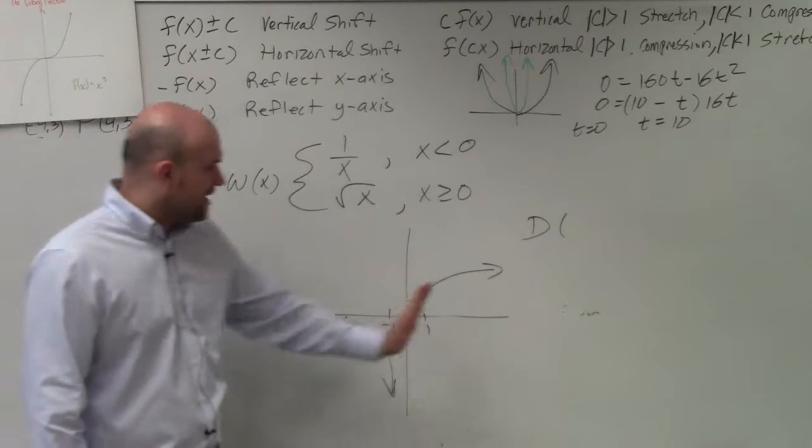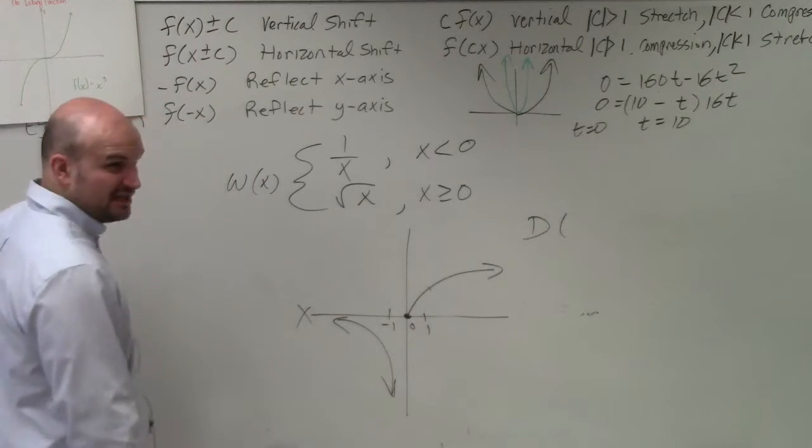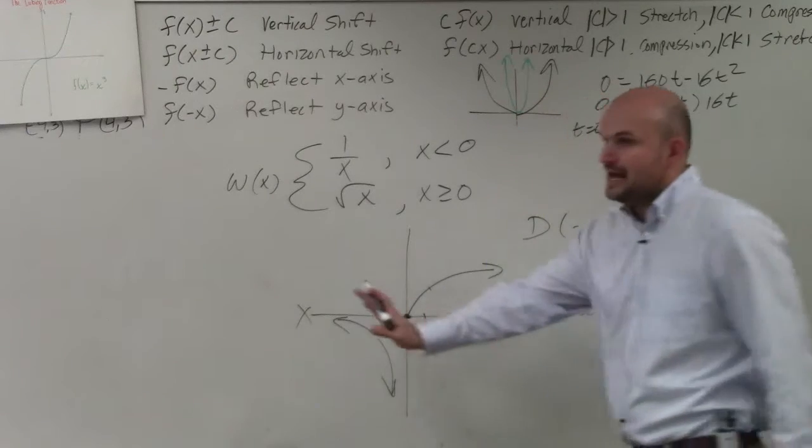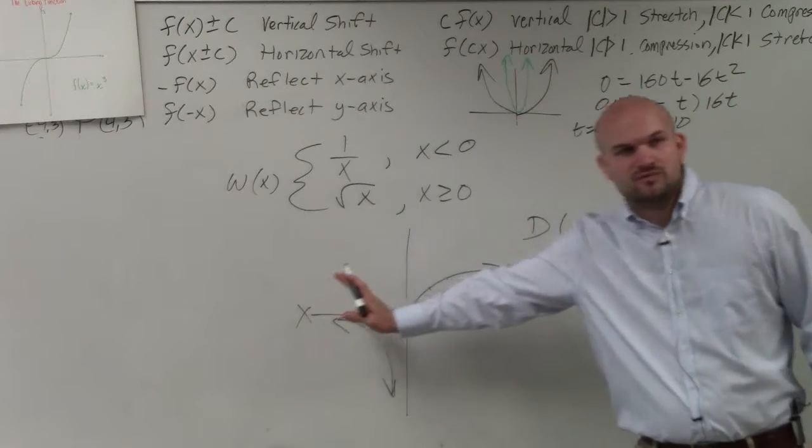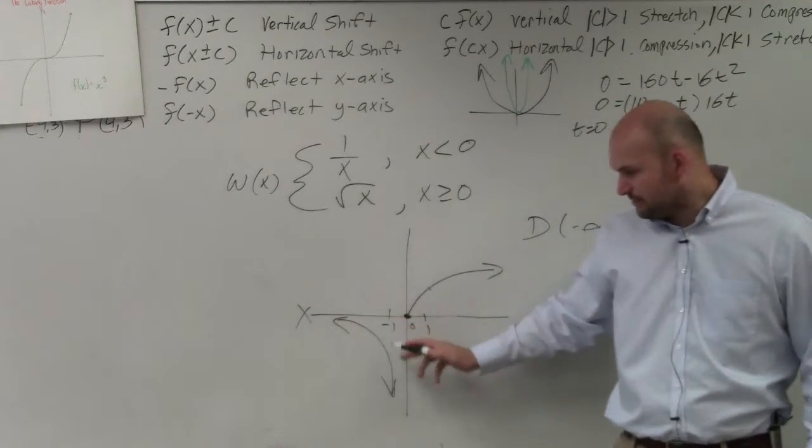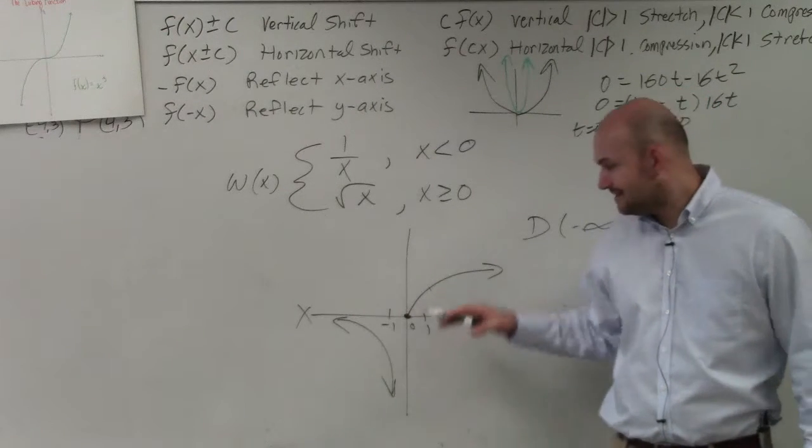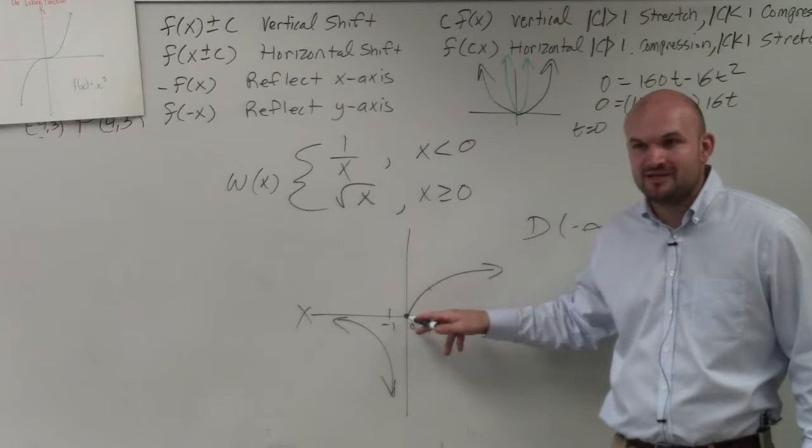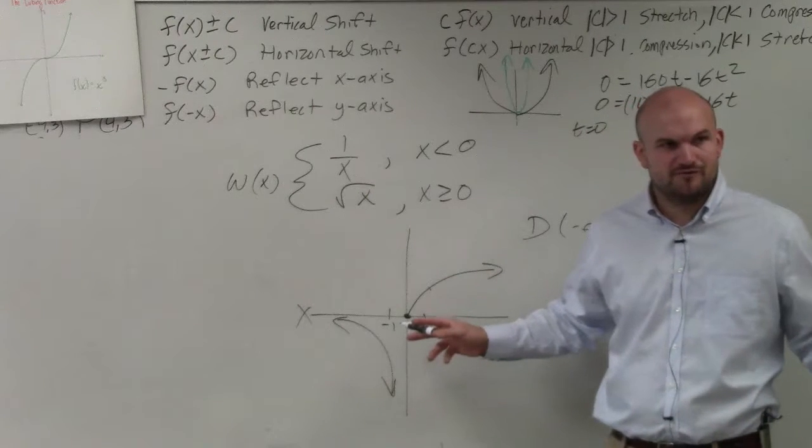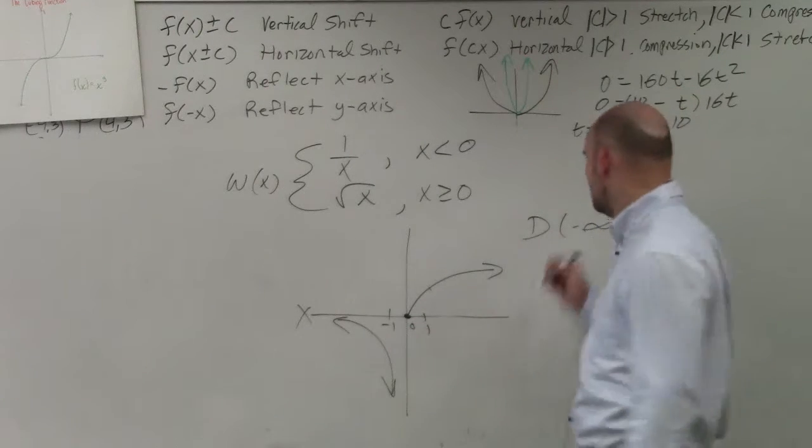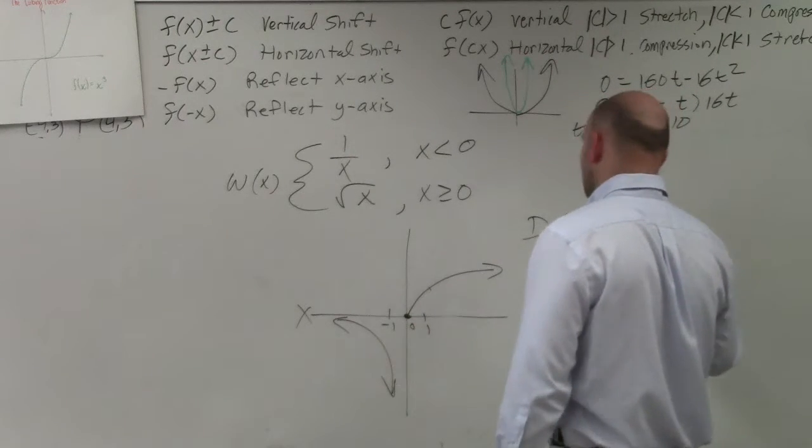So we see that this graph is going infinitely to the left, so we go negative infinity. And then, how far to the right are we going? Well, you can see that this graph doesn't go to 0, right? But this function does have a value at 0, so is 0 covered for a function? Yes. So we can go negative infinity to infinity.